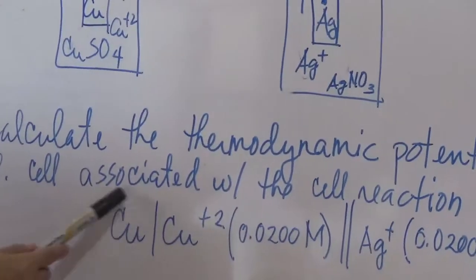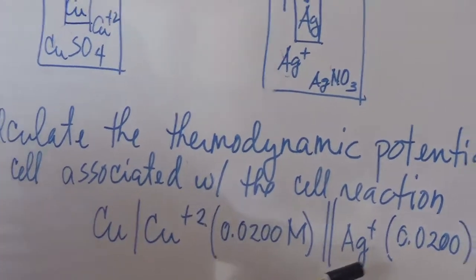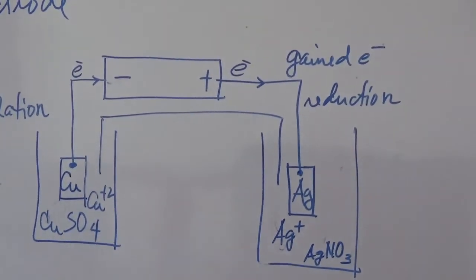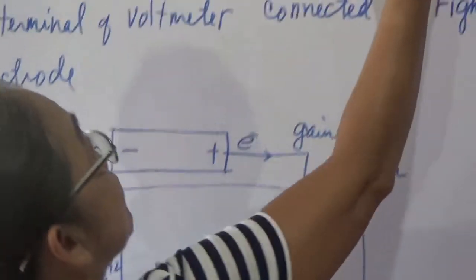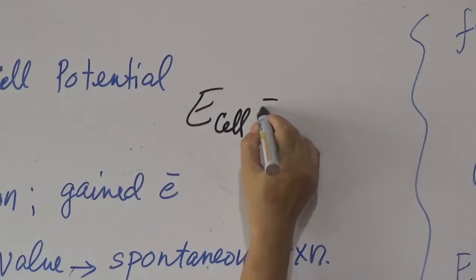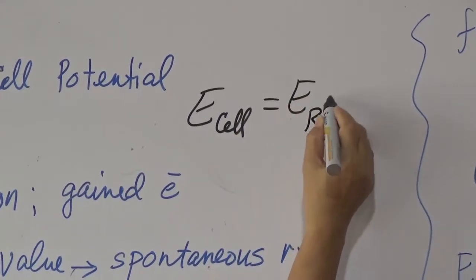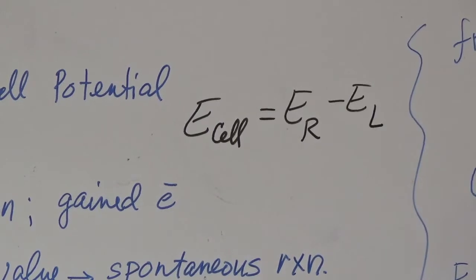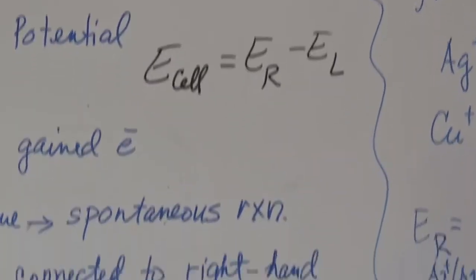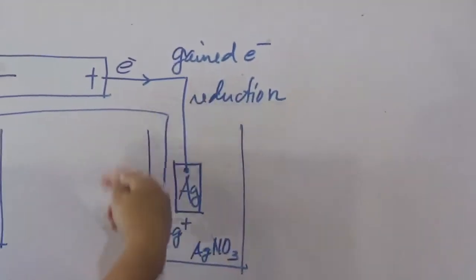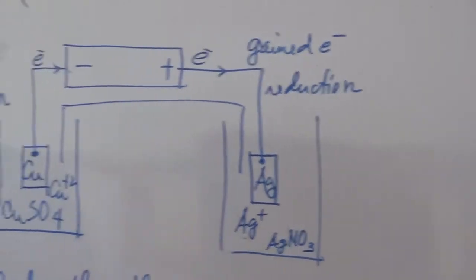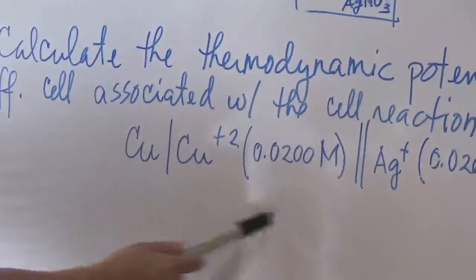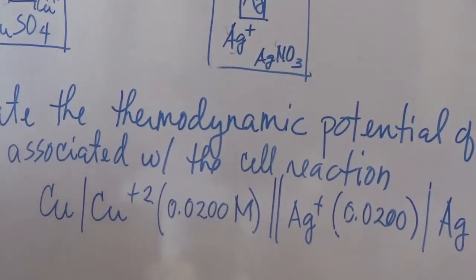The left side is oxidation and the right side is reduction. The cell potential is defined as the electrode potential at the right side minus the electrode potential at the left side. By convention, the right side is always the reduction electrode and the other side could be the anode or oxidation electrode. This also holds in the shorthand expression.